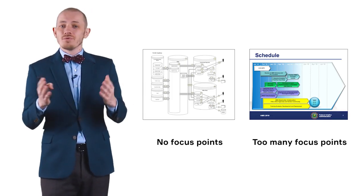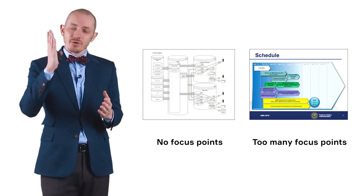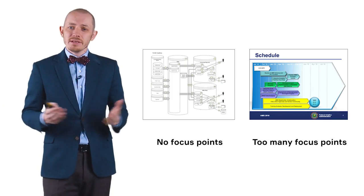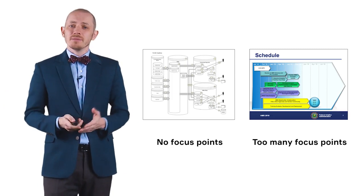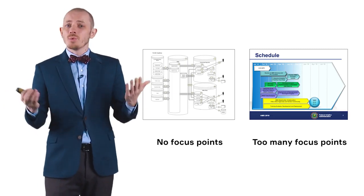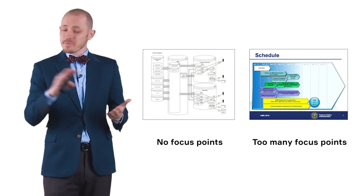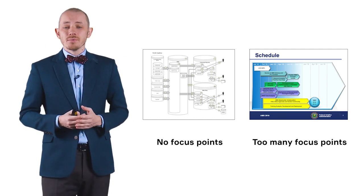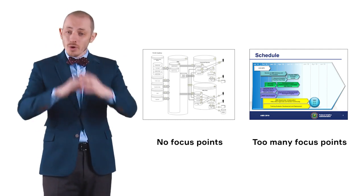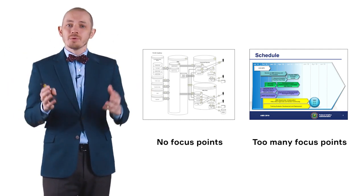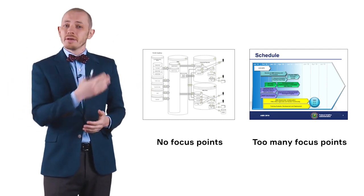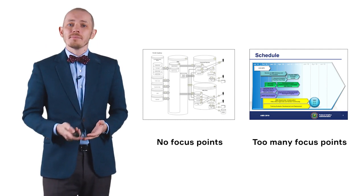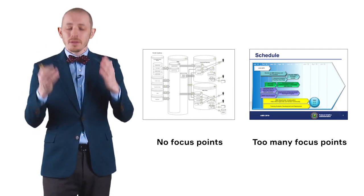We need to find an optimum somewhere in between. I think what we need is three to five bright points on the chart. The whole chart should not be all bright, and it should not be just black and white either.